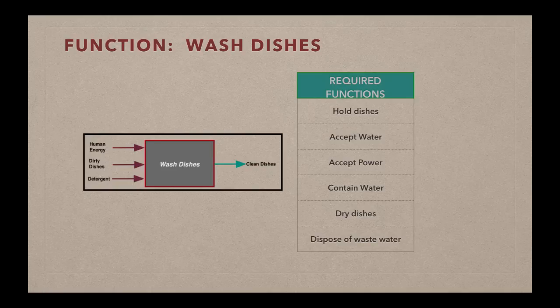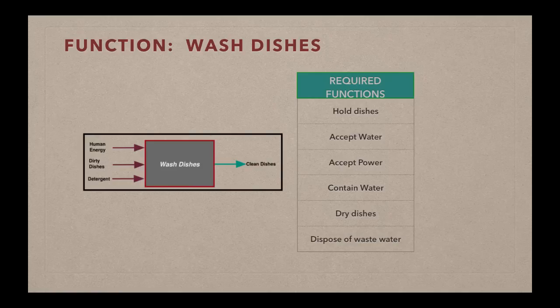So we have just a few of the required functions listed here and in a function tree it might look something like this and you'll notice those top level functions are the overall functions that would describe the absolute necessities associated with washing dishes. So we need to be able to hold the dishes, we need a way to contain the water, a way to receive water or accept water into that system, a way to get rid of it or dispose of it. We need a way to power the dishwasher and to dry the dishes.